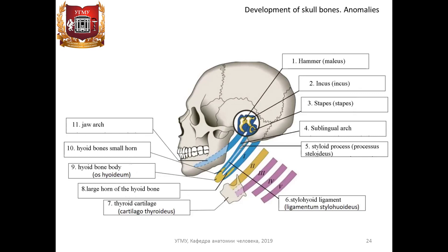Anatomical development of visceral skull bones. In humans there are five branchial arches, but the fifth arc is poorly developed and rudimentary. The first branchial arc is called the mandibular. The first, second, and third branchial arches participate in the development of the visceral skull. The first visceral arc gives rise to the auditory ossicles. The second arc consists of two parts, upper and lower: the auditory ossicle and the styloid process of the temporal bone develop from the upper part, while the lower part forms the small horns of the hyoid bone. The large horns and body of the hyoid bone are formed from the third branchial arch.